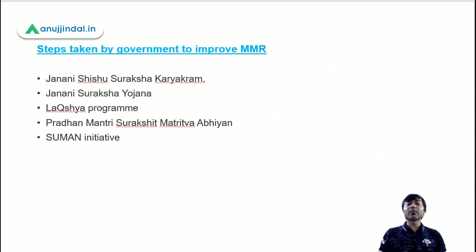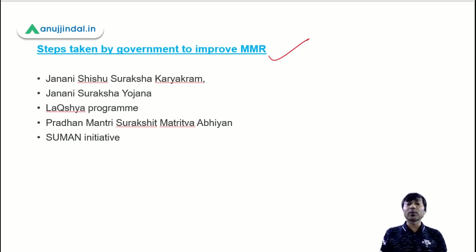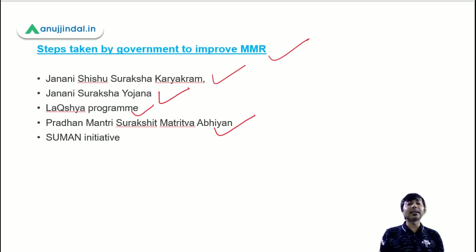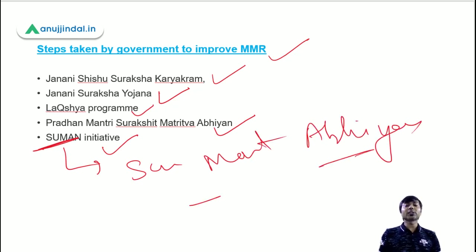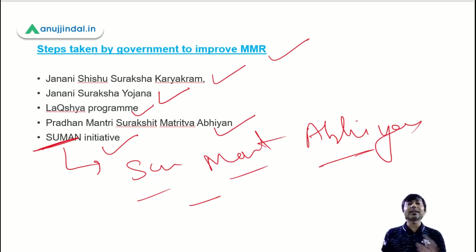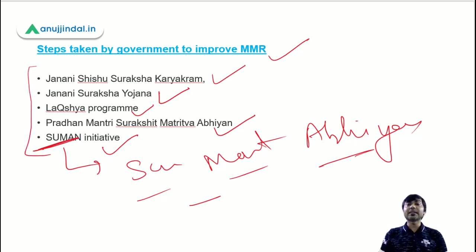Steps taken by the government to improve MMR include various schemes: Janani Shishu Suraksha Karyakram, Janani Suraksha Yojana, Lakshya program, Pradhan Mantri Surakshit Matritva Abhiyan, and the recently implemented SUMAN initiative. SUMAN stands for Surakshit Matritva Abhiyan, launched last year in October. All these schemes are beneficial to improve MMR.